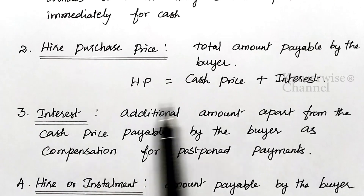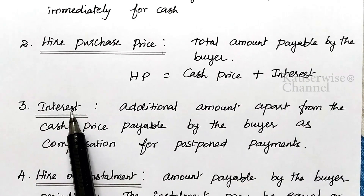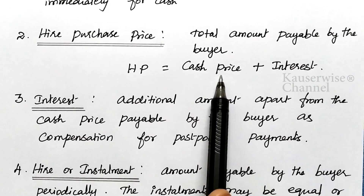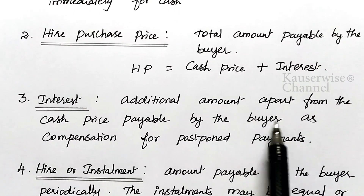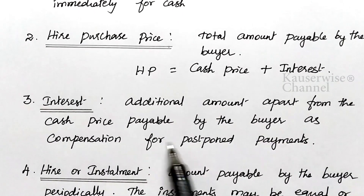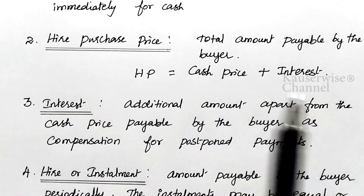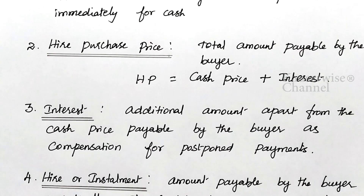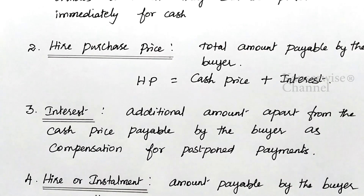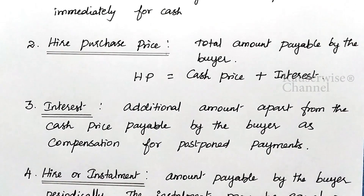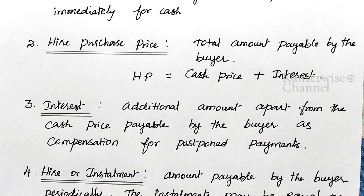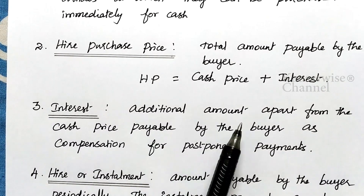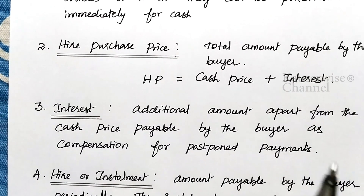The next term is interest. Interest is an additional amount apart from the cash price, payable by the buyer as compensation for postponement of payment. The buyer is going to make payment on a periodical, installment basis — he is postponing the payment — and for that the buyer has to pay some extra amount. That extra amount is called interest.